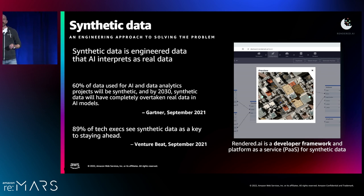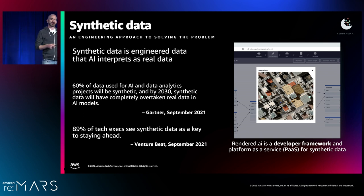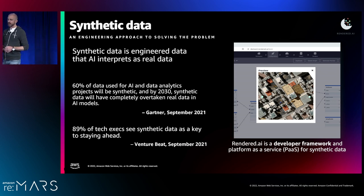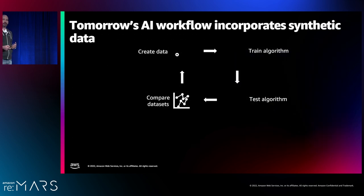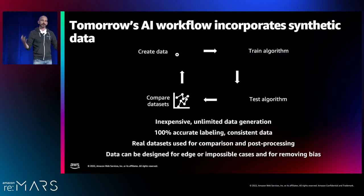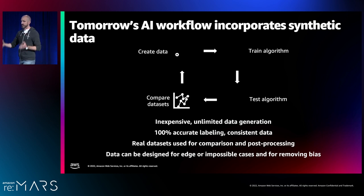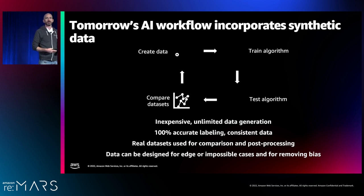That is such an important problem to solve that Gartner is saying that in the next three years, 60% of the data we use in AI is going to be synthetic, and by the end of the decade, nearly 100%. The reason is just all the things we said before — you can't get there from here with real data. And when we start to use synthetic data, it does more than just give us access to a different static data set. It actually completely revamps what the engineering workflows look like, so instead of a linear approach we can now continue to iterate and make the data a part of the engineering solution.